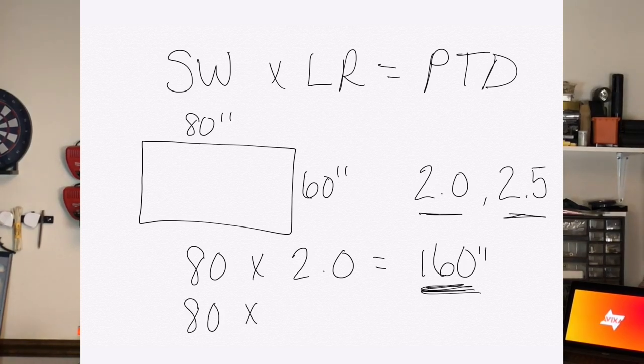For the second example, we're going to work out 80 inches wide times 2.5, which gives us 200 inches, so that means I can place the projector 200 inches away from the screen.